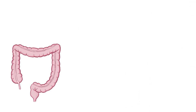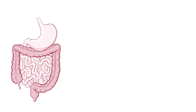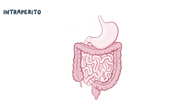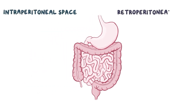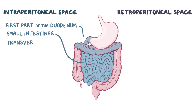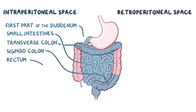The large intestine is found in the abdominal cavity, which can be thought of as having two spaces: the intraperitoneal space and the retroperitoneal space. The intraperitoneal space contains the first part of the duodenum, all of the small intestines, the transverse colon, sigmoid colon, and the rectum.